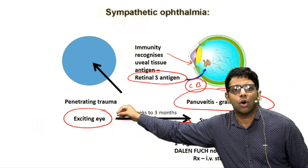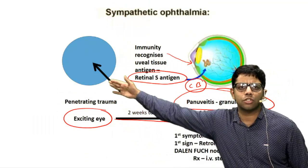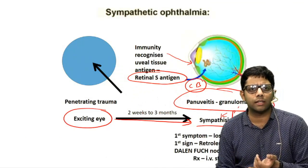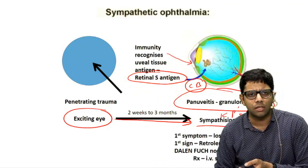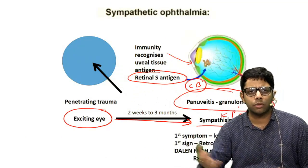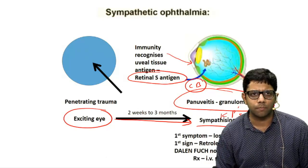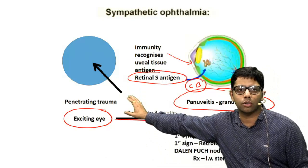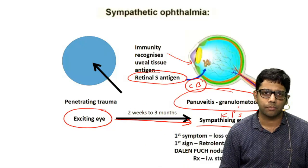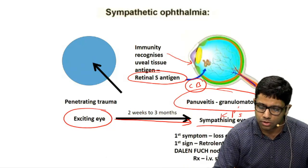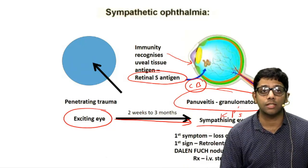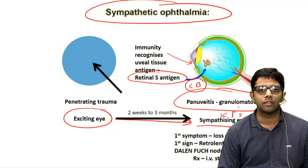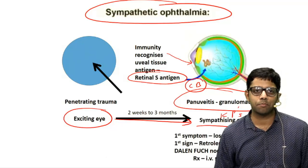However, Vogt-Koyanagi-Harada has systemic features — poliosis, tinnitus — and no history of trauma. Sympathetic ophthalmia follows penetrating trauma or anything entering the eye involving the uveal tissue, including complicated cataract, glaucoma, or other ocular surgeries. Penetrating trauma remains the most important cause. So the answer to today's EQ is sympathetic ophthalmia. Thank you for listening, best of luck.